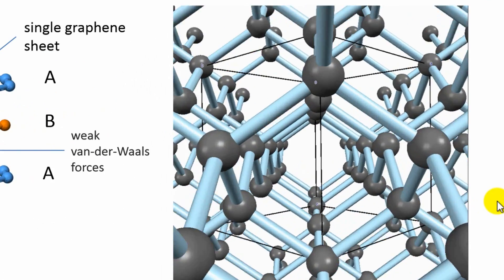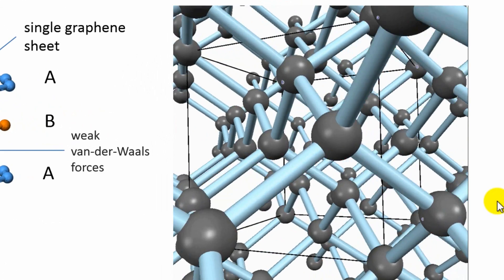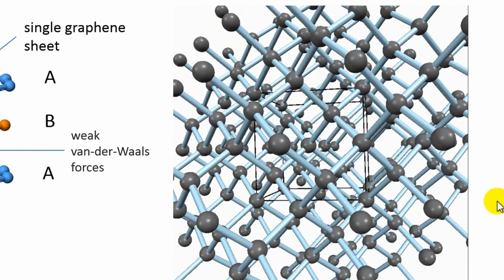Let's have a look at the slightly extended network. Yes, now we clearly see this fully connected network. And in contrast to graphite, diamond does not have any delocalized electrons.